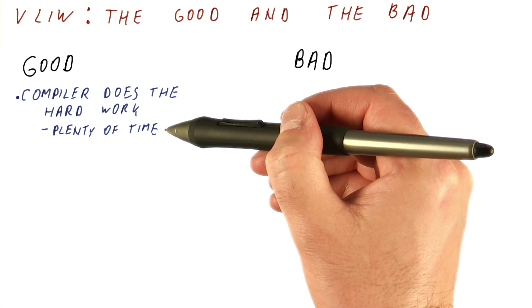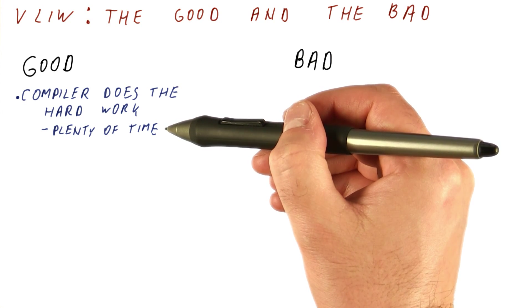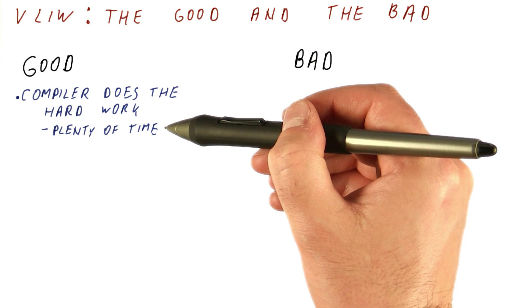In contrast, in an out-of-order processor, we have very little time to come up with a decent schedule. Because any time we spend figuring out the schedule is the time we are adding to the program execution time.